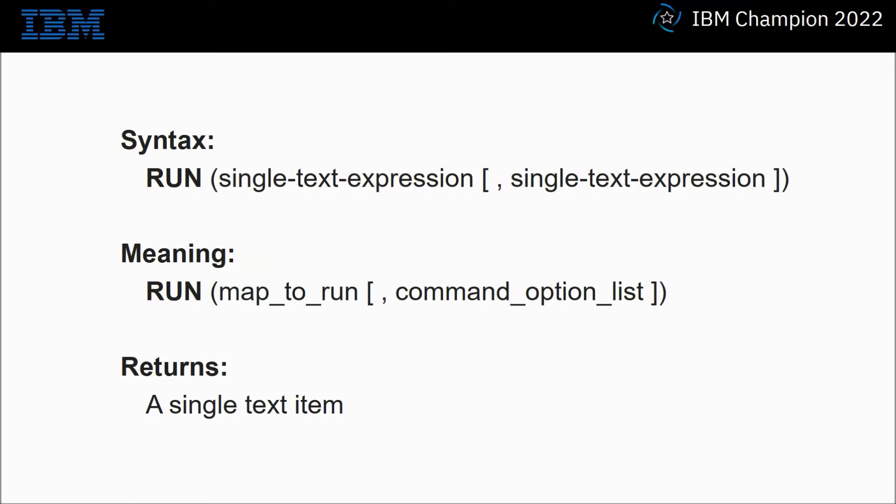On screen is a syntax summary of the run function. At the absolute minimum you have a single text expression representing the name of the map to run. Optionally you have additional arguments that will be the command option list. The run function returns a single blob text item. It is worth noting that the resource registry can be used in either argument number one for the map name or argument number two for the command option list, or both.